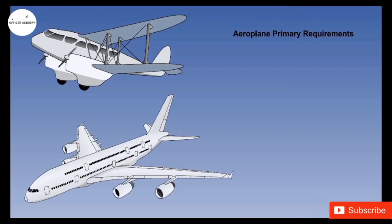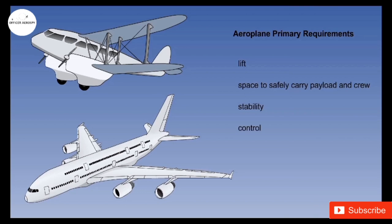From old airplanes to today, the requirements of an airplane have remained very much the same. These are the force lift, which enables the airplane to fly in air, a safe space in which the payload can be carried, and stability that helps the airplane to continue in the same direction, and control to change the position in air. And one of the most important is thrust, which moves the airplane forward. These are some requirements important to define an airplane.